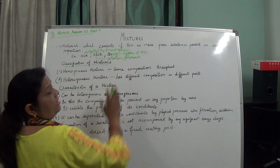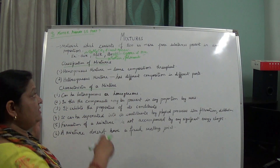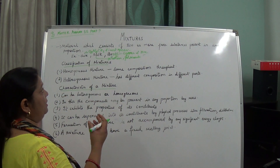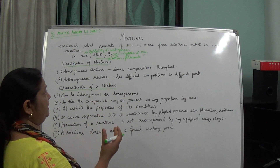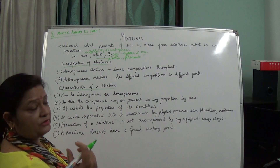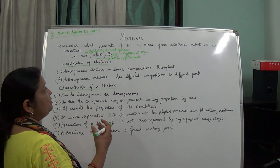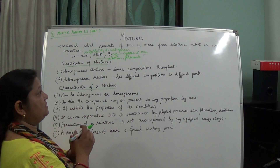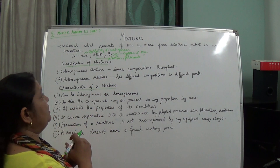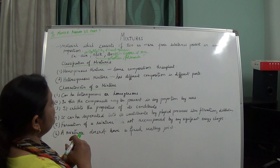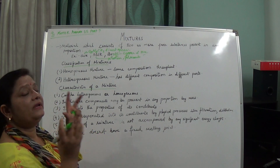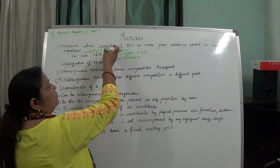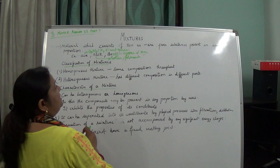The proportion in mixtures is not fixed. We are not saying this much protein is present in milk or this much fat is present in milk. Even when we are talking about air or brass, the proportion is not totally fixed. It is simply a combination of two or more pure substances. Copper is a pure substance, zinc is a pure substance, forming brass which is a mixture.